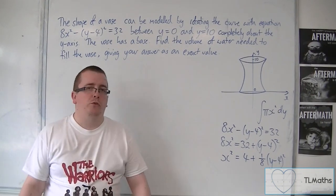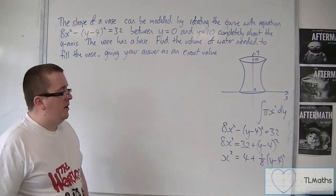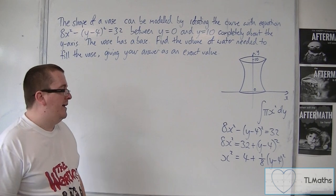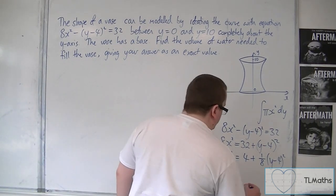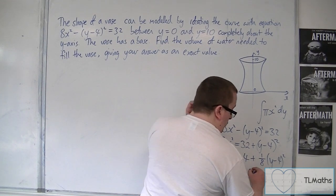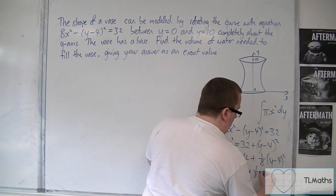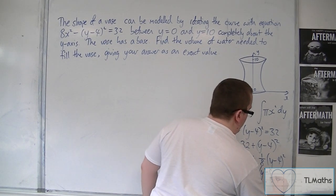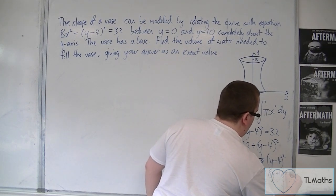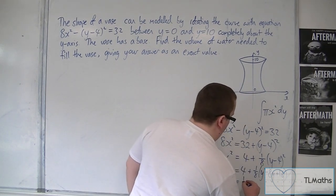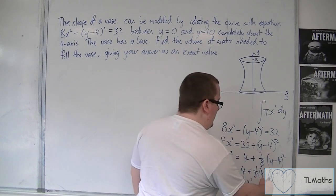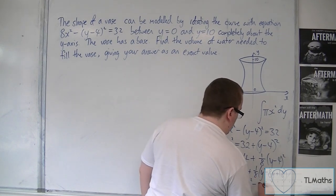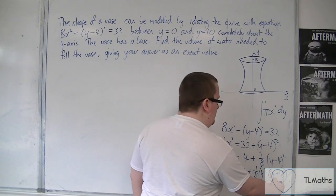Now because it's (y-4)², it makes sense to expand that out because it's just going to be easier to integrate. Right, so we've got 4 + ⅛(y² - 8y + 16). So we're going to have ⅛y² - y, so minus y. ⅛ of 16 is 2.